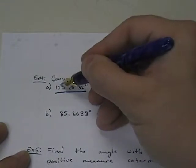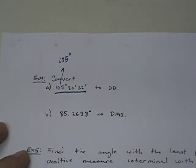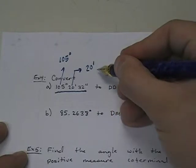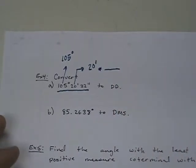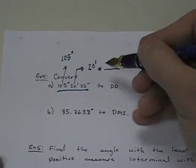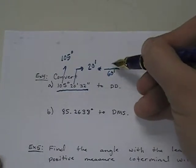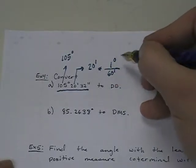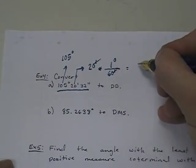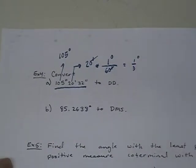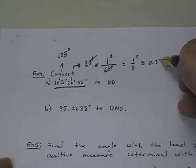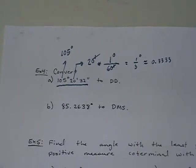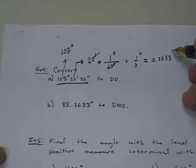I want to make degrees. 105 is already in degrees, so I leave it alone. 20 minutes is not in degrees, so I have to convert it. I take 20 minutes and multiply by a unit fraction equal to 1. There are 60 minutes in one degree, so 20 times 1 over 60 — the minutes cancel and I get 1/3 of a degree, or 0.3 repeating. Rule of thumb: carry to 4 decimal places. That final unit is in degrees.